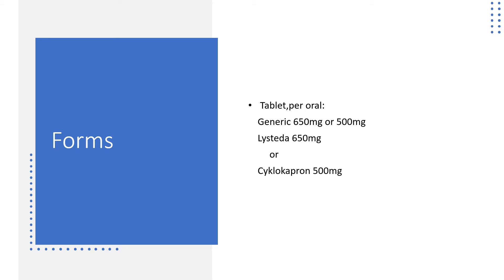Tranexamic acid can also be in tablet form for oral use. The generic is available at 650 mg or 500 mg tablets. Brand options include Lysteda at 650 mg or Cyklokapron at 500 mg.